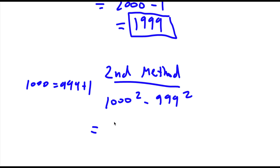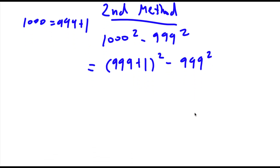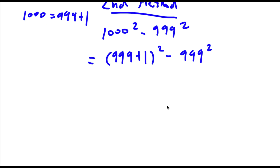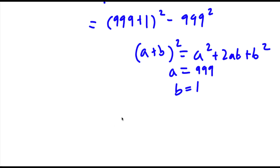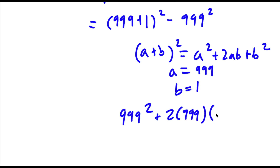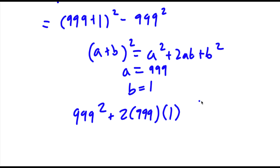So now I have (999 plus 1) squared minus 999 squared. Now if I have something in the form (a plus b) squared, this is equal to a squared plus 2ab plus b squared. So in this case a is equal to 999 and b is equal to 1. So this would be 999 squared plus 2 times 999 times 1 plus 1 squared, and then I have my minus 999 squared at the end.